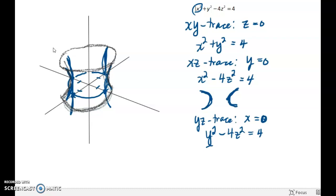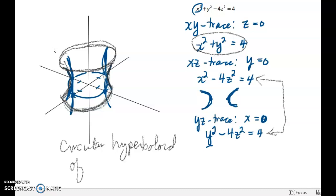This is an example of a circular—because this trace is a circle, and both of these are hyperbolas—so it's a circular hyperboloid of one sheet.